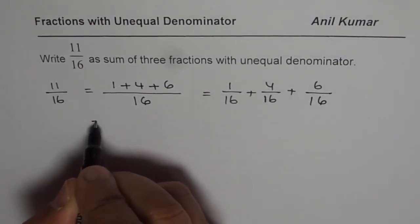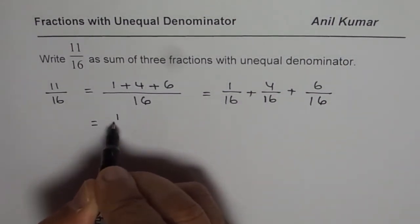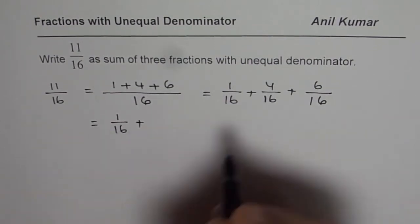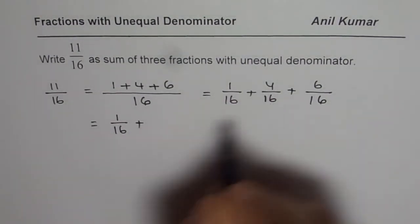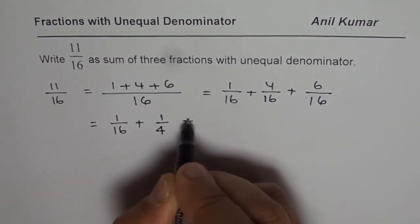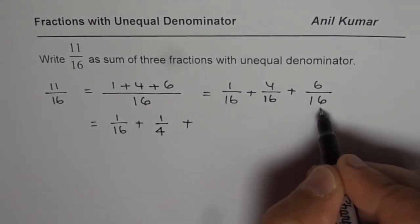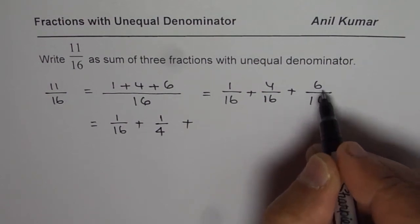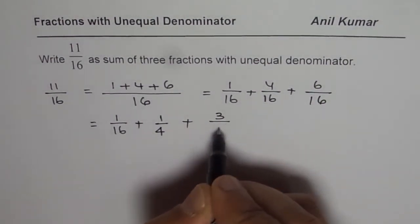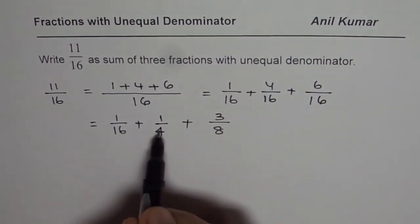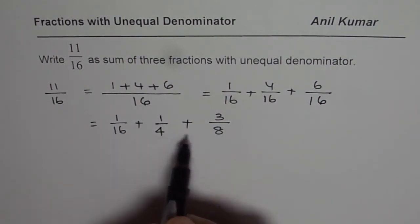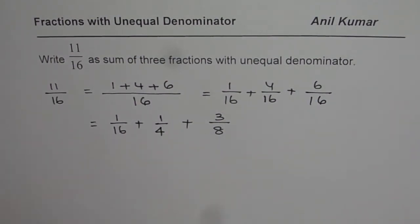Dividing both by 4, you get 1 over 4 and here you could divide both by 2. So if you divide by 2, you get 3 over 8. So if you add these three fractions, they have different denominators. You'll get 11 over 16. You get an idea. So let's do it once again.